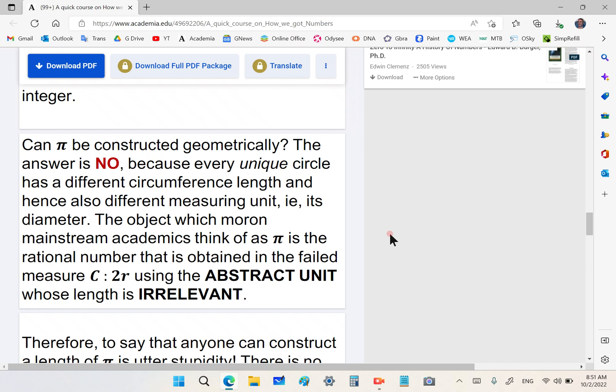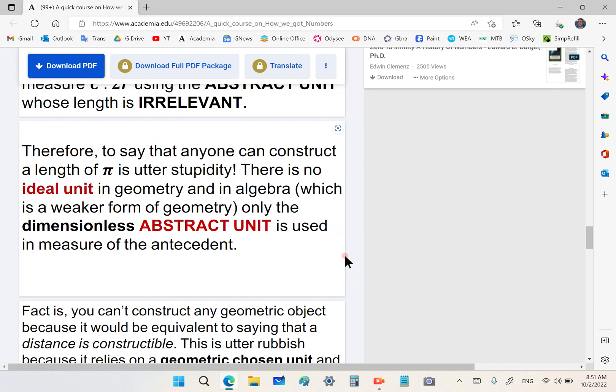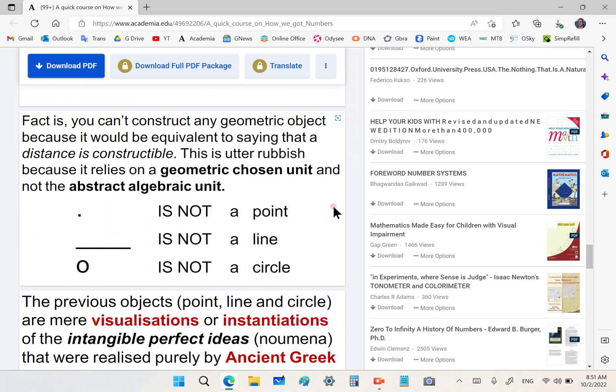If we're talking about non-homogeneous magnitudes, we don't even care about its type. You can say one pencil and one peanut. Those are two objects, non-homogeneous objects. Therefore, to say that anyone can construct a length of pi is utter stupidity. There's no ideal unit in geometry. In algebra, which is a weaker form of geometry, only the dimensionless abstract unit is used in the measure of the antecedent.